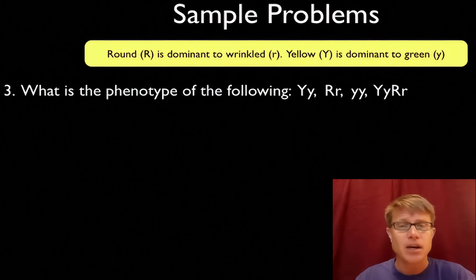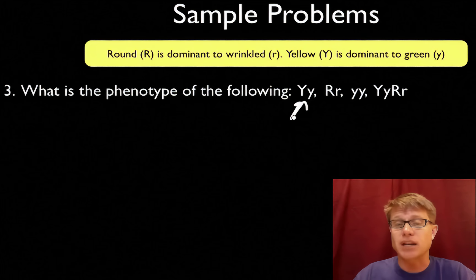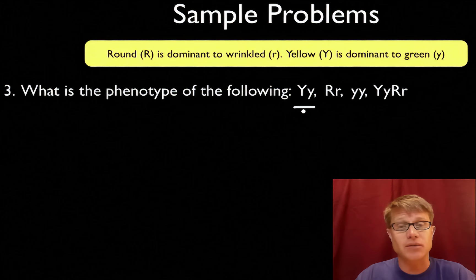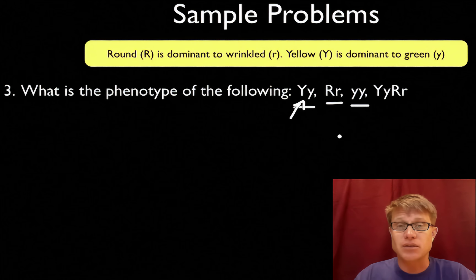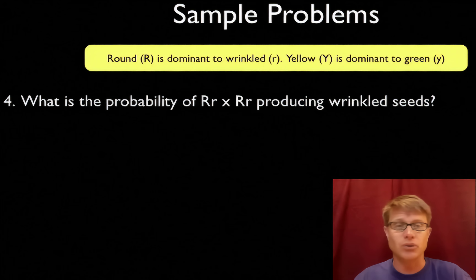Question three: what's the phenotype of the following? The genotype is the genes you have. The phenotype is physically what you look like. Big Y, little y is heterozygous for that trait, but its phenotype would be yellow — since big Y is dominant. Big R, big R would be round. Little y, little y would be green. And big Y, big R, little y, little r would be yellow and round. Phenotype is physically what you look like.